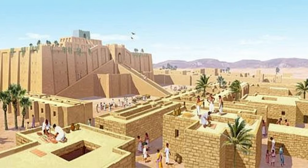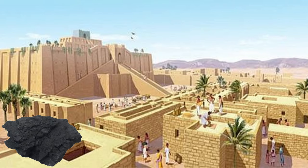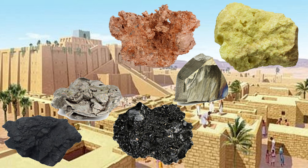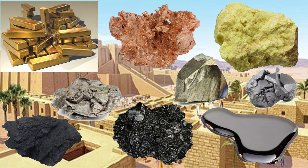Let's start with a bit of history. In ancient times, the elements carbon, sulfur, iron, copper, silver, tin, gold, mercury and lead were already known.